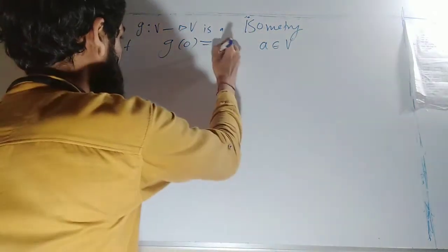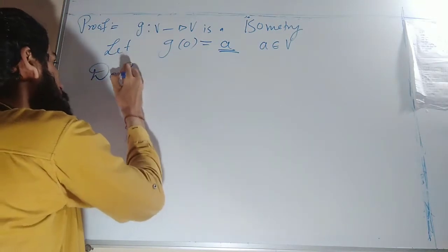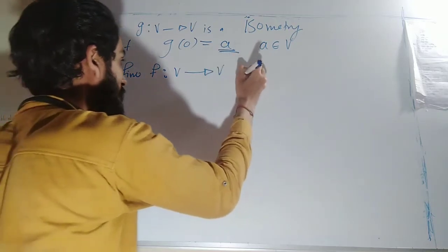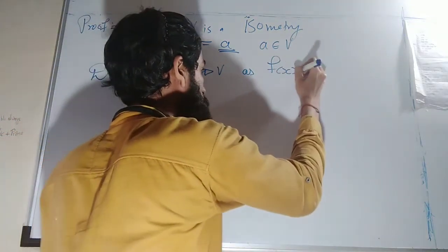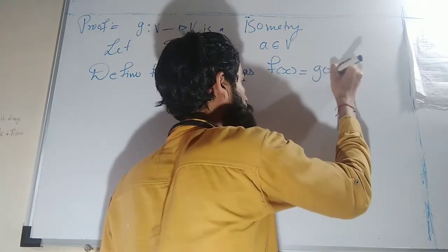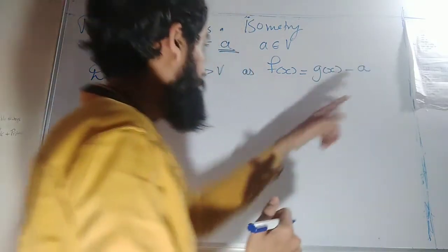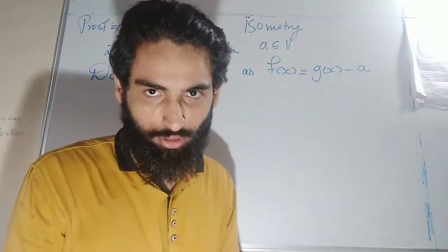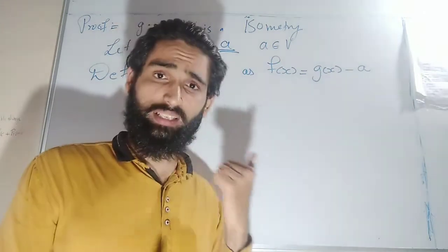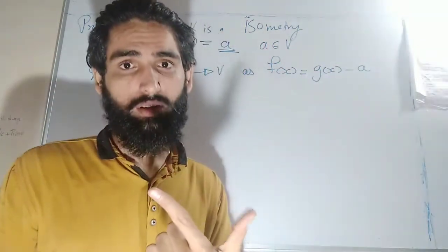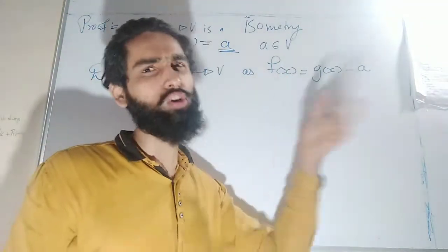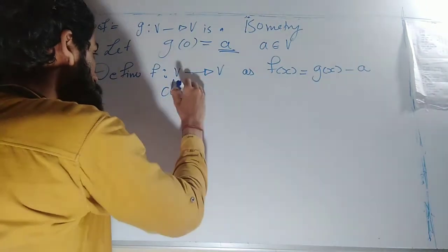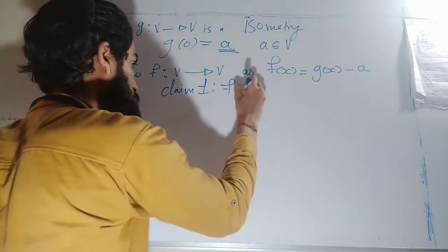We will use this element a. What we do is define f from V to V as f(x) = g(x) − a, where a is nothing but g(0). Our claim is to prove that f is an orthogonal transformation. If I prove it is distance-preserving and preserves the origin — that is, it is an isometry preserving origin — then it automatically becomes an orthogonal linear transformation. So Claim 1: f is orthogonal.